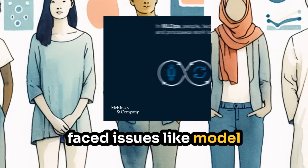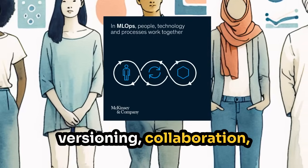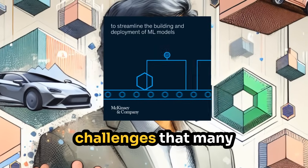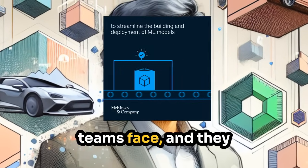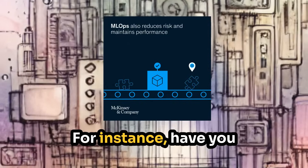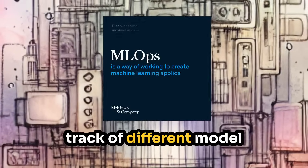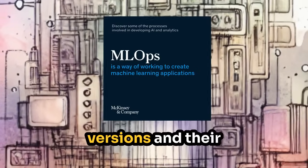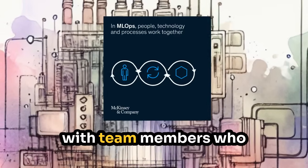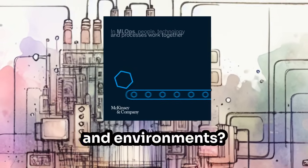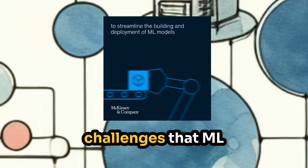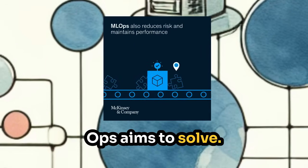When working on machine learning projects, have you ever faced issues like model versioning, collaboration, and scaling? You're not alone. These are common challenges that many teams face, and they can be significant roadblocks to success. For instance, have you ever struggled to keep track of different model versions and their performance metrics? Or maybe you've had trouble collaborating with team members who have different workflows and environments. These are just a few examples of the challenges that MLOps aims to solve.